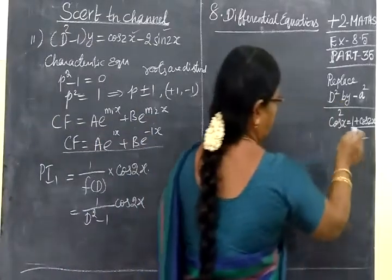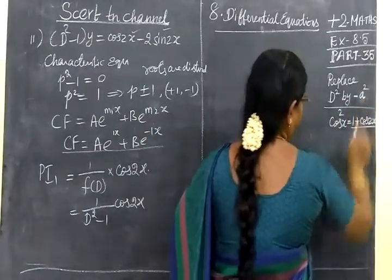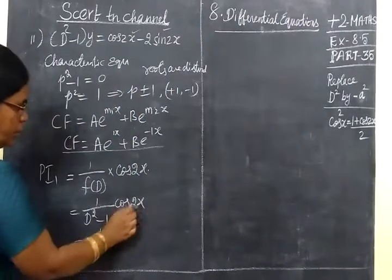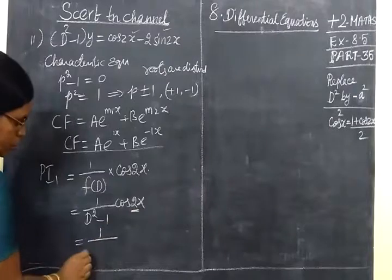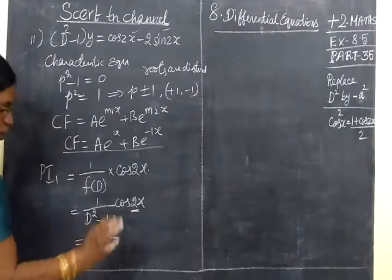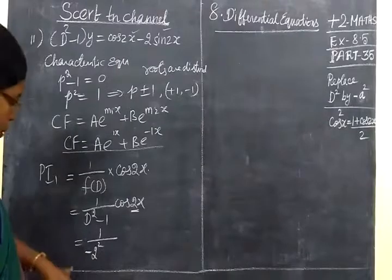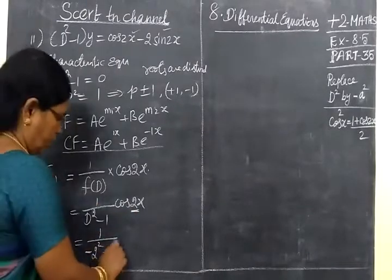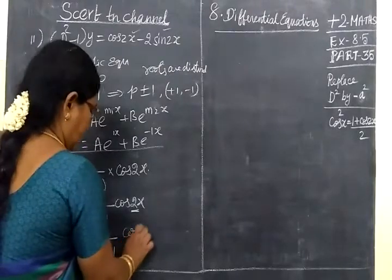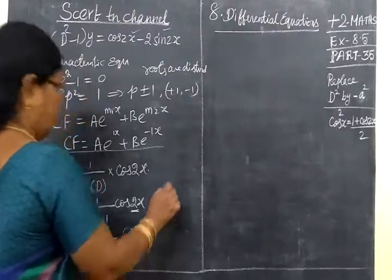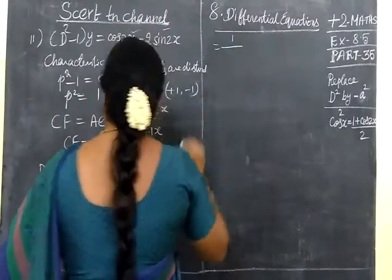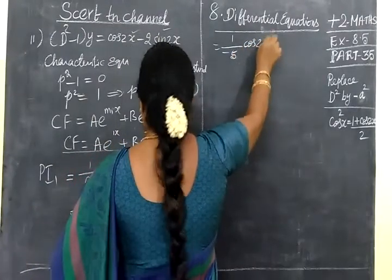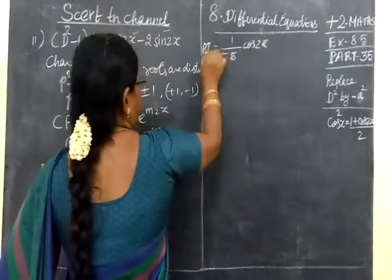Replacing D² with -a² where a = 2, we get 1/(-4 - 1) × cos2x = -1/5 × cos2x. So this is PI1.